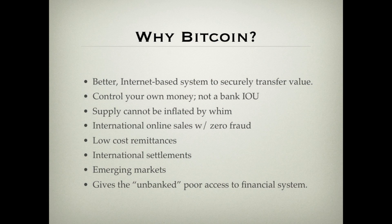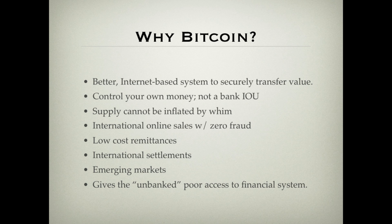Bitcoin also eliminates identity fraud because it does not require any identity to push payments to you. Low cost remittances: I spent about $130 to send $1,000 to my step uncle in Croatia using Western Union, but it cost about one penny to do the same thing with Bitcoin. International settlements: there are huge multi-billion dollar banks that do nothing but settle transactions across borders — Bitcoin makes those banks completely irrelevant. Emerging markets and the unbanked: there are 80 countries around the world that just don't have access to credit cards. No one is denied access to Bitcoin. If you have as little as a dumb phone with SMS, you can send and receive Bitcoins.